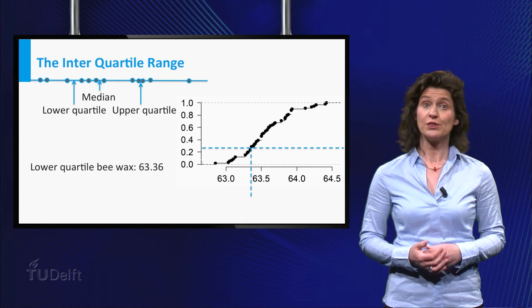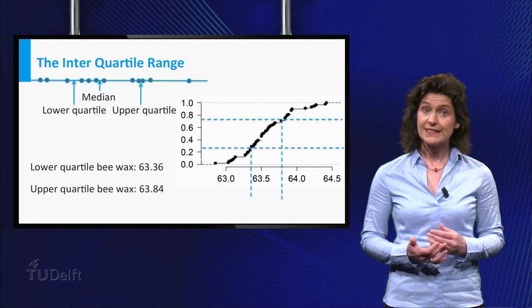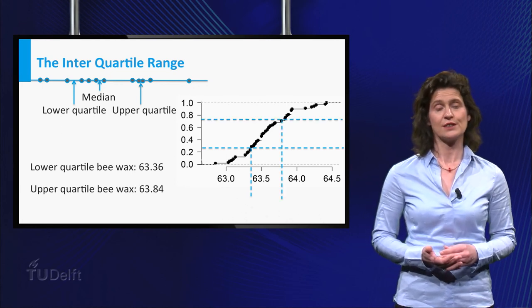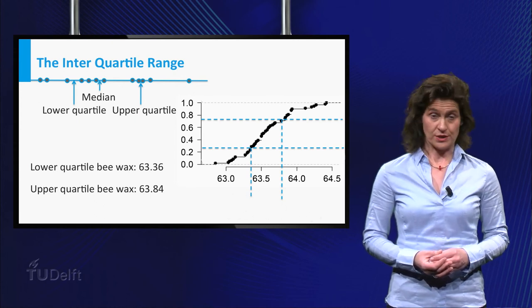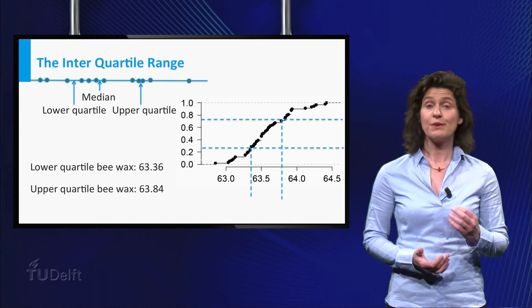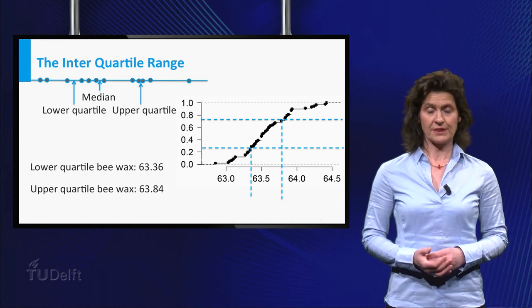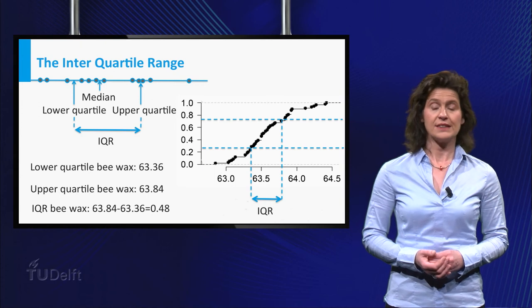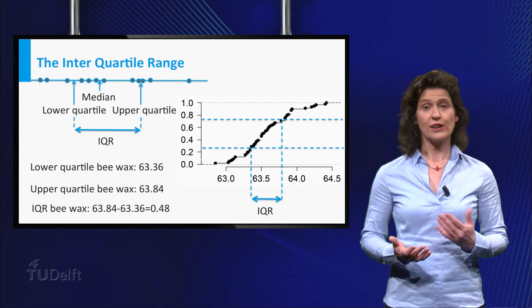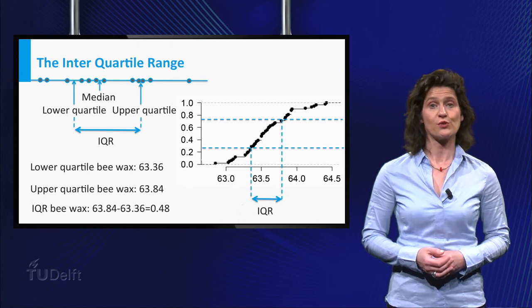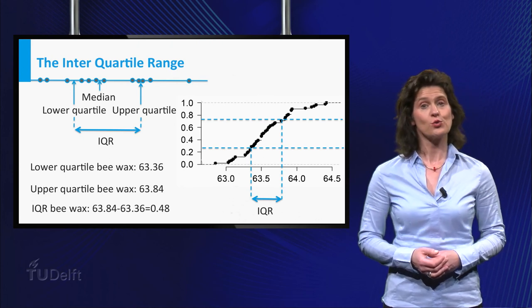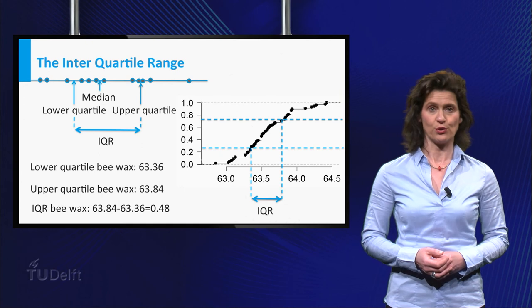Similarly, you can determine the upper quartile and for this dataset its value is 63.84. Based on these quartiles, you can define a third measure of variation of the data, the interquartile range. This is the difference between the third and the first quartile. As you see, for the melting temperatures of natural bwax, the interquartile range is equal to 0.48.